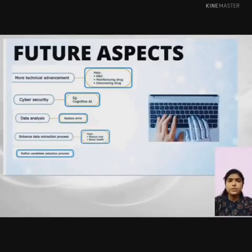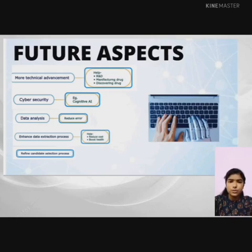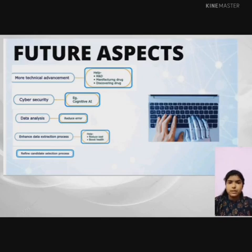Major factors for future aspects of AI include: first, more technical advancement which helps in R&D, that is research and development, and helps in manufacturing and discovering drugs. Second is cybersecurity — AI could detect software vulnerabilities and perform response actions like self-patching, for example cognitive AI. Third is data analysis — AI offers accurate information unlike humans, which reduces errors. Fourth is enhanced data extraction processes, which helps in cost reduction and boosts health. Fifth is refined candidate selection — artificial intelligence can search online resumes and profiles to find the best candidates.